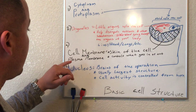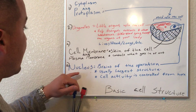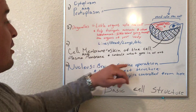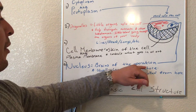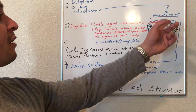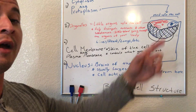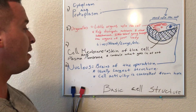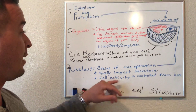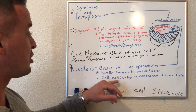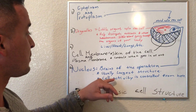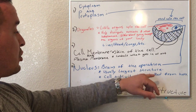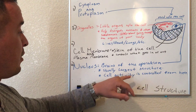The last thing is the nucleus. The nucleus is like the brain of the operation — it's like the brain of the actual cell. It controls what's going on, who's getting fed, and it keeps your cells alive. It's usually the largest structure inside the cell.